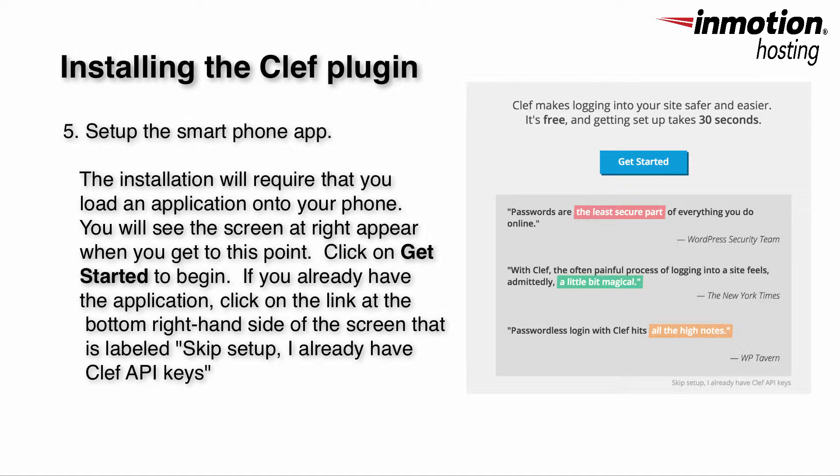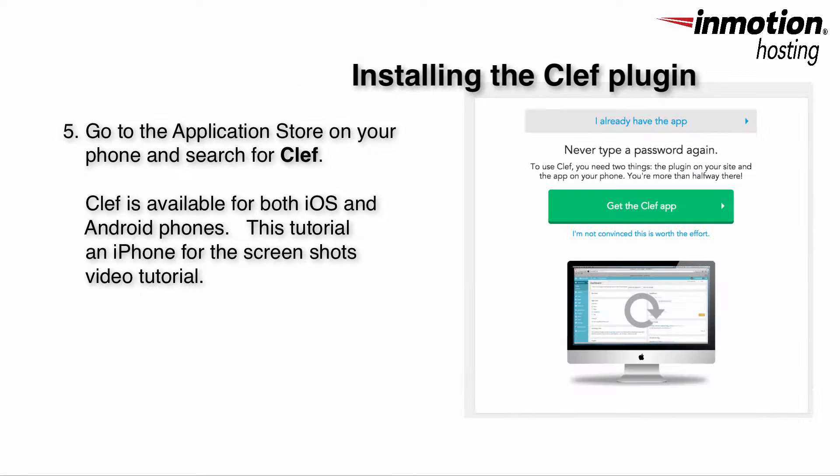Once you've installed the Clef plug-in into WordPress, the next step is to actually set up the smartphone application. You'll see a screen that says Get Started from Clef and it will take you through the installation of the application on your phone.